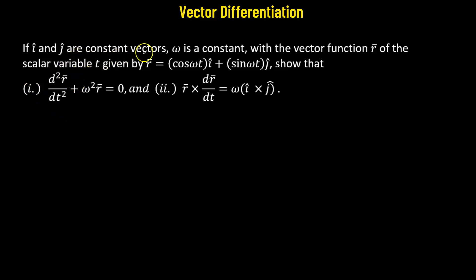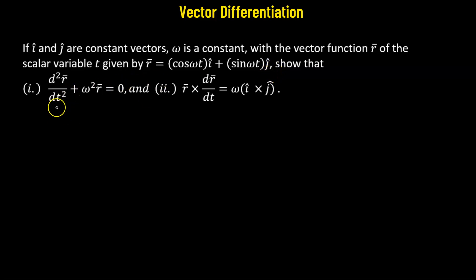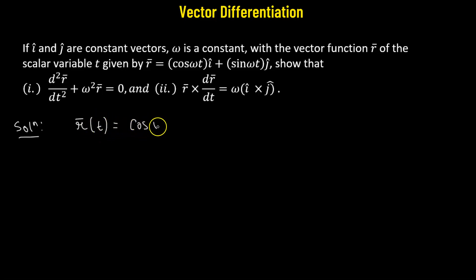In this problem we are provided with two constant vectors, the unit vectors î and ĵ. We also have ω which is a constant, and the vector value function r(t) is given by cos(ωt)î plus sin(ωt)ĵ. We have to show two parts. Let's begin by writing down the vector value function r(t) = cos(ωt)î + sin(ωt)ĵ, where cos(ωt) is the x component and sin(ωt) is the y component.